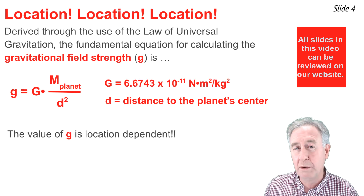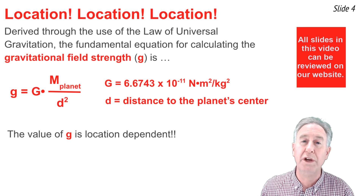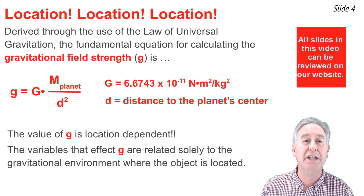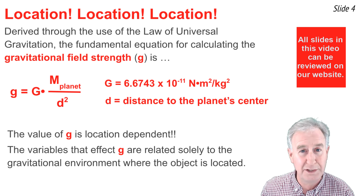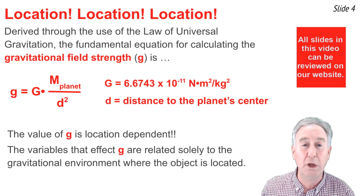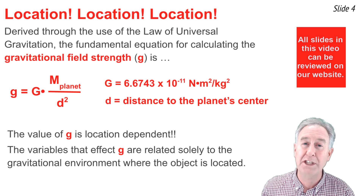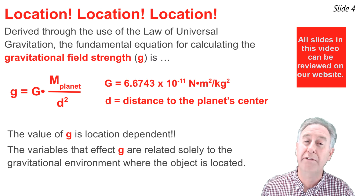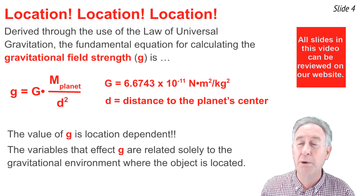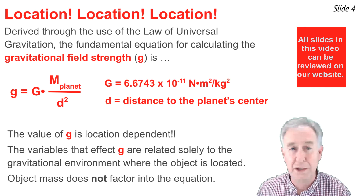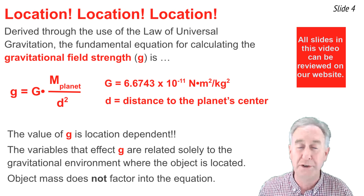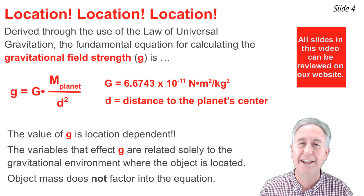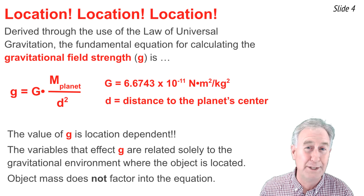One thing we note when looking at this equation is that the value of g is location dependent. It depends solely upon the gravitational environment the object finds itself in. The two parameters that are location dependent are the mass of the planet creating the gravitational field and the distance you are from the center of that planet. Importantly, the gravitational field strength does not depend upon the mass of the object experiencing that field.